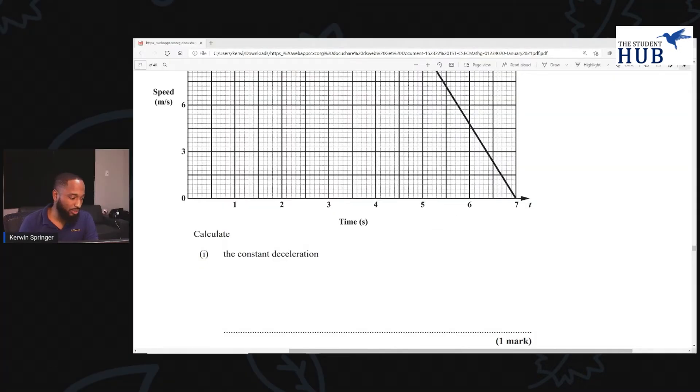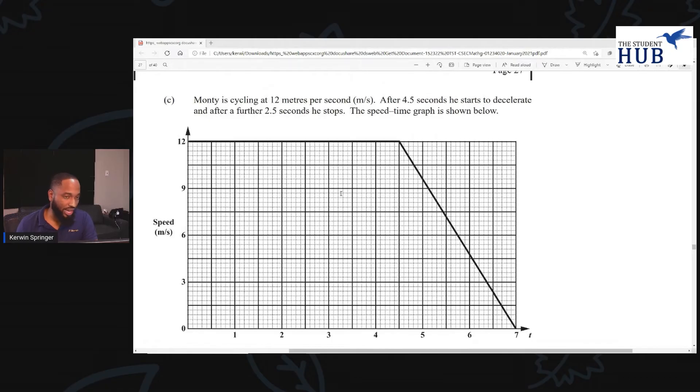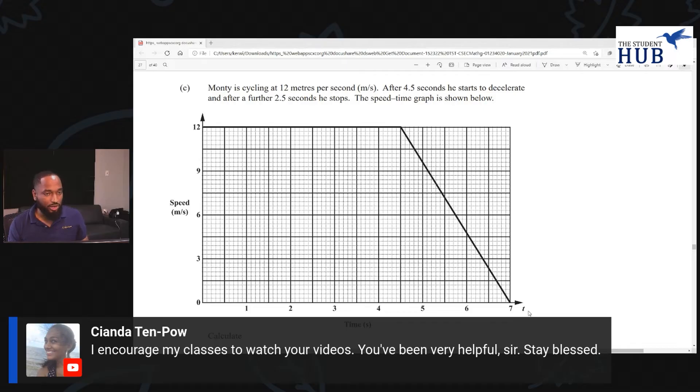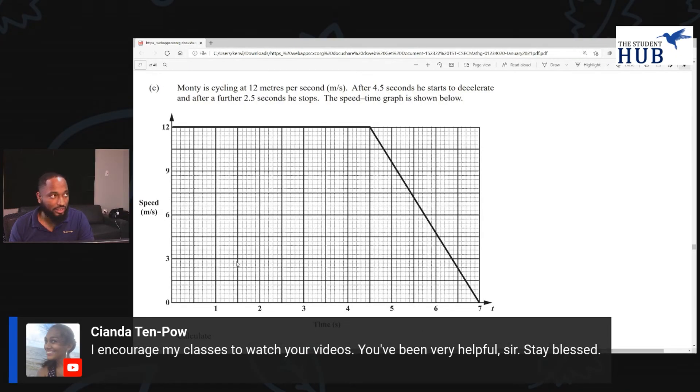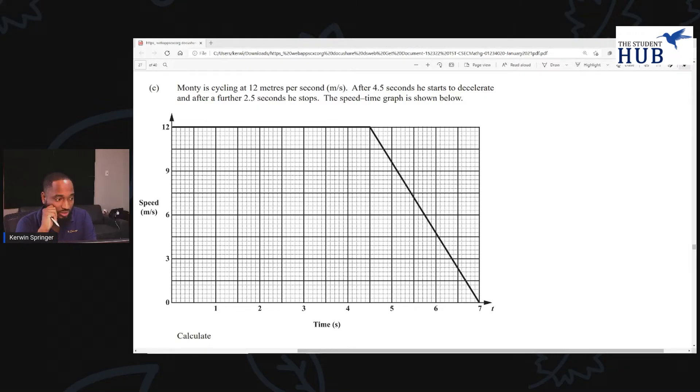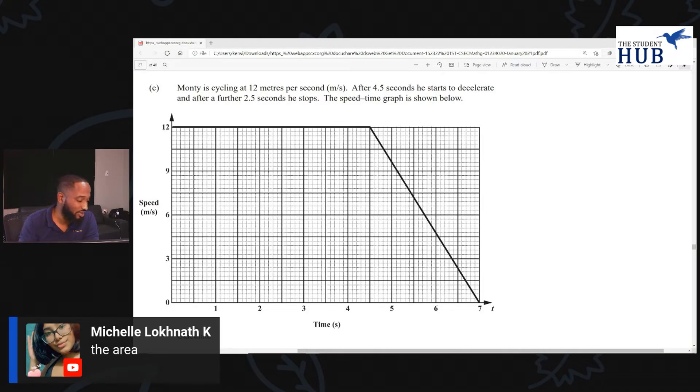So we're going to do the last part of the question. Monty's average speed over the 7 seconds. So we are asked to find his average speed over the whole 7 seconds. Anybody with ideas of how we're going to do this? So we get his average speed by finding the total distance he traveled and dividing by time. Average speed is distance over time. Now this begs the question, how are we going to find out the distance? How are we going to get this total distance he traveled over the 7 seconds? Well, there's another characteristic that you learn in maths about speed time graphs. If you want to find the total distance, it's the area under the graph. Well done, Michelle.